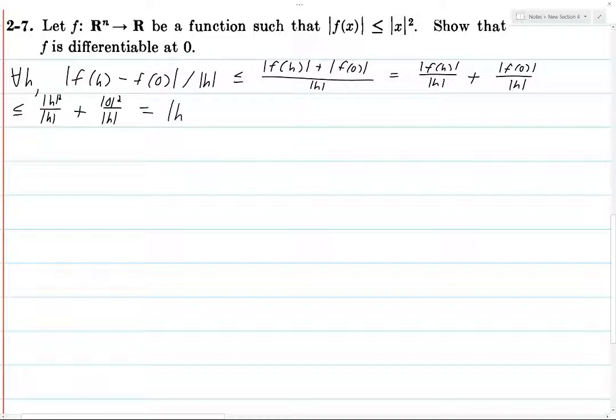Well, the first thing becomes just the norm of h. This is assuming that h is not the zero vector. So we end up with, the first thing, you cancel an h and you cancel h from the numerator and denominator and are left over with h, and the second term is zero, because you've got zero squared in the numerator.